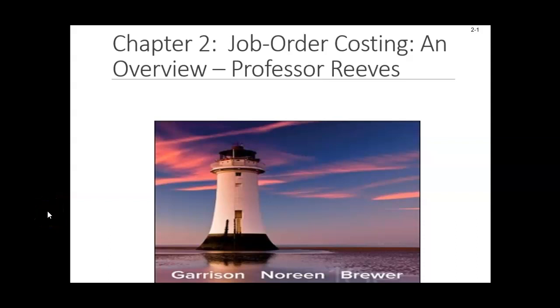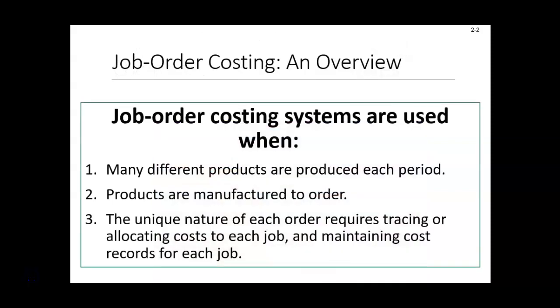Hello everyone. In chapter 2 we focus on a job order costing system. Perhaps you're asking what is a job order costing system? This is a system where companies are going to assign costs to each unique job.